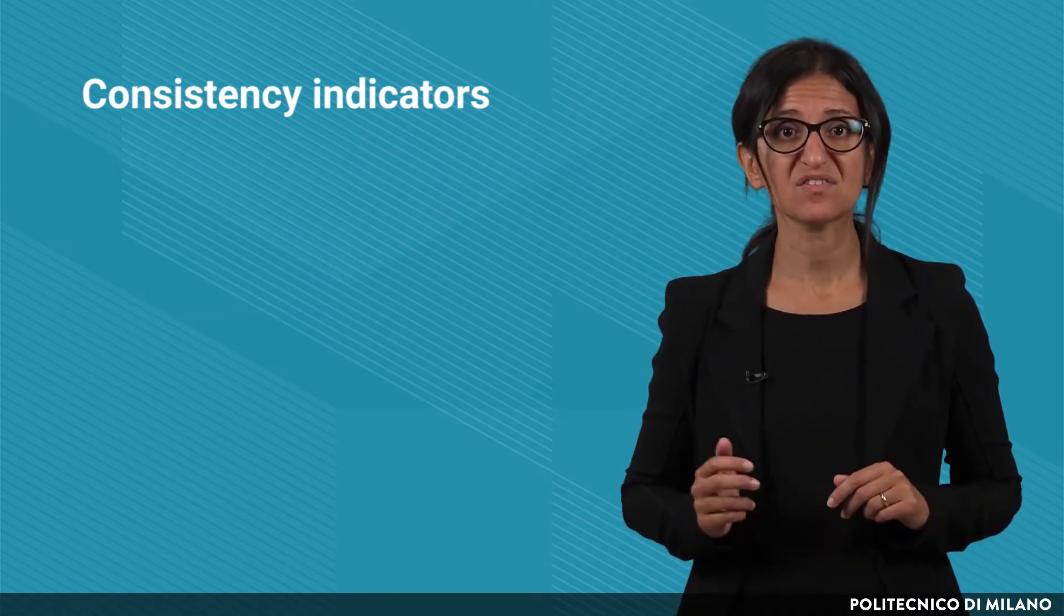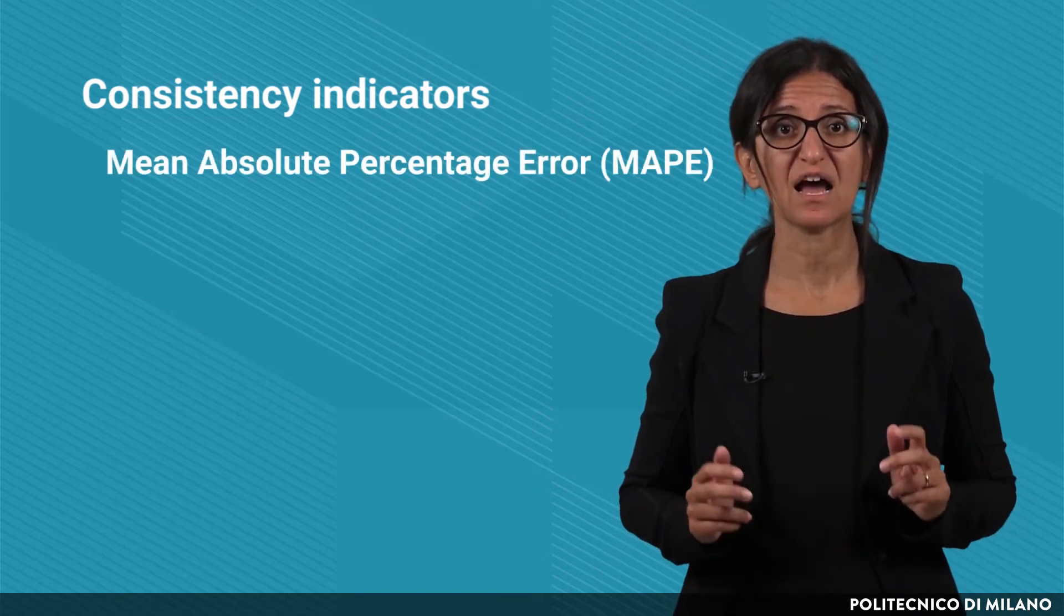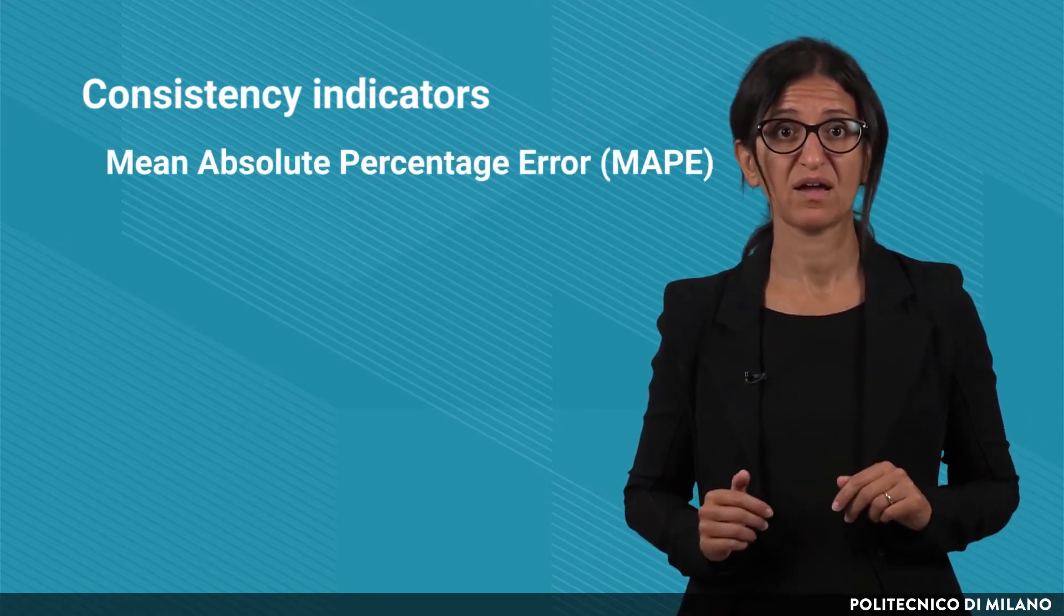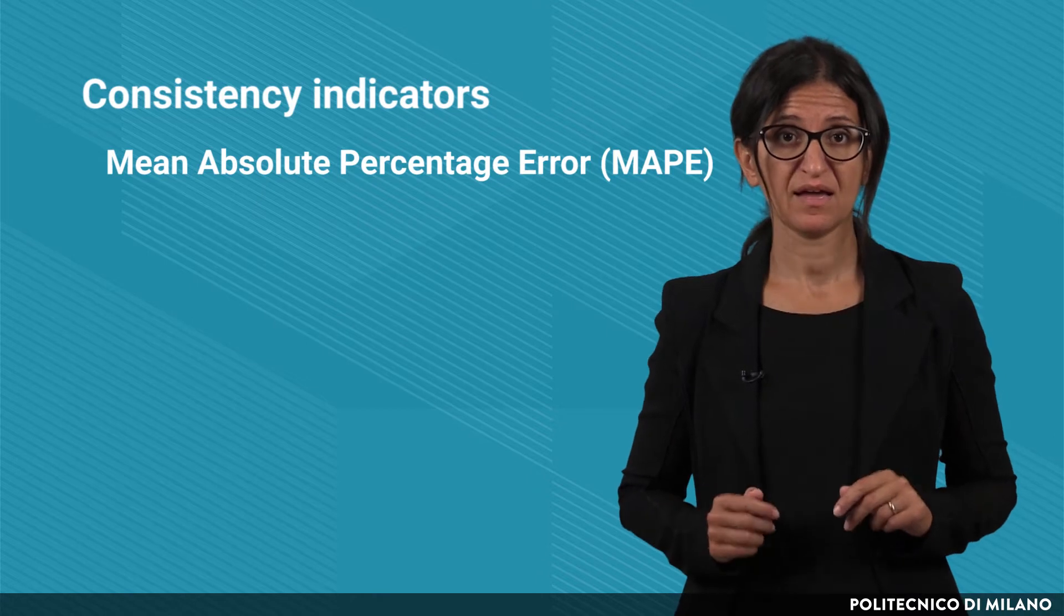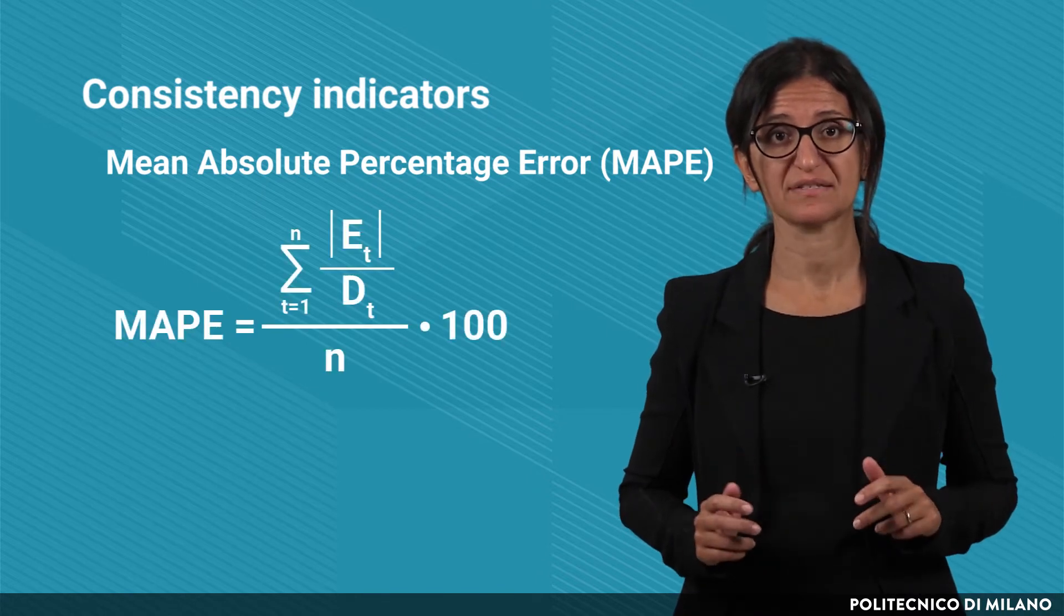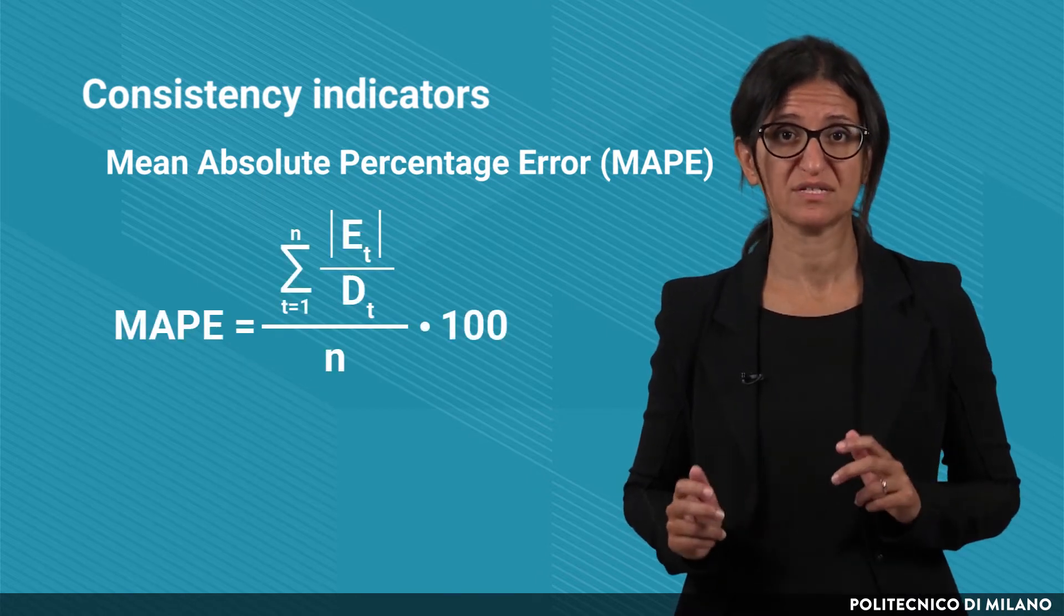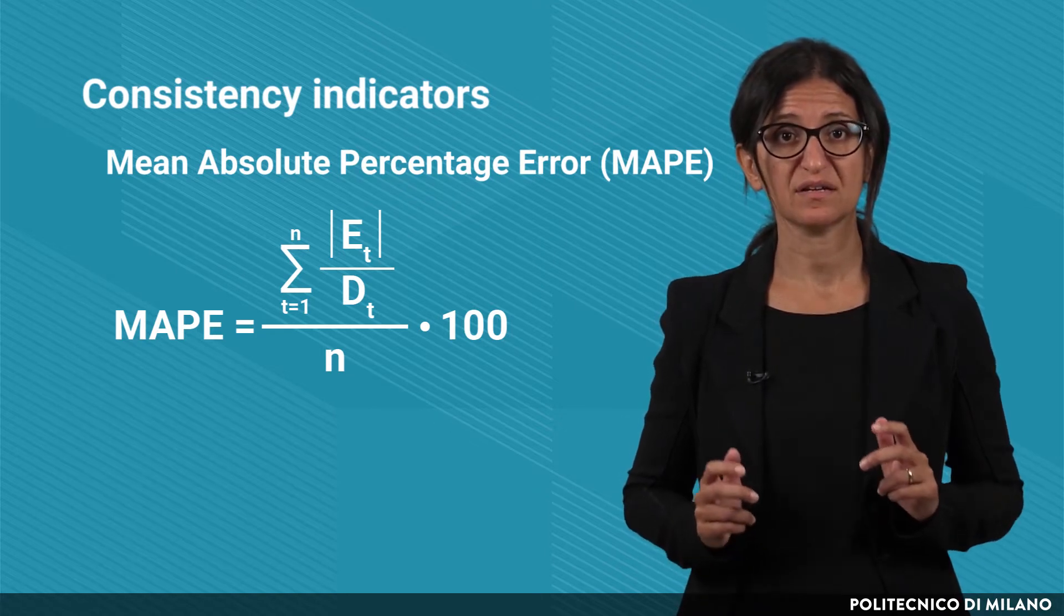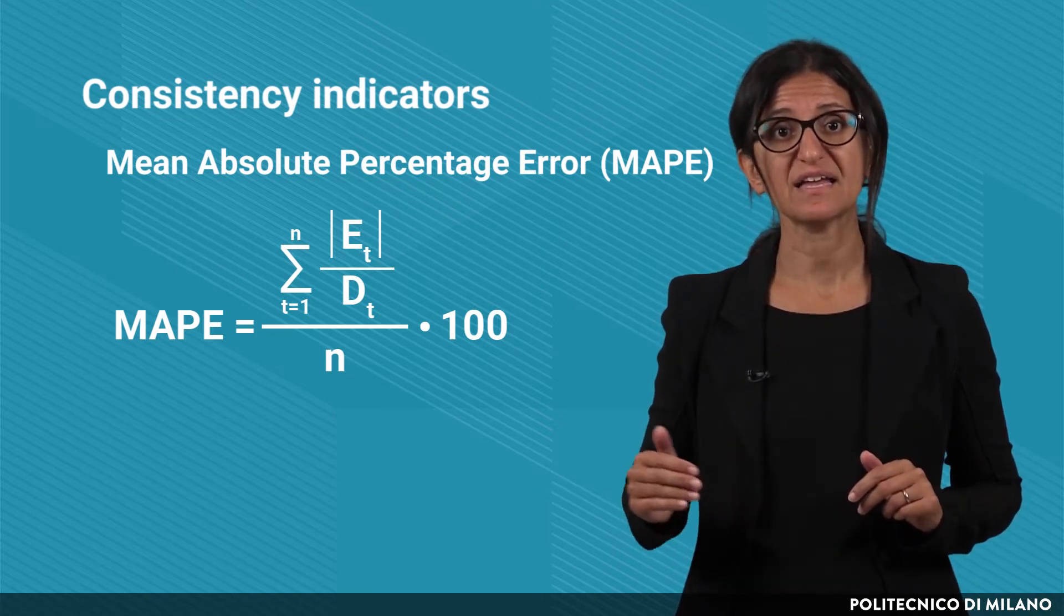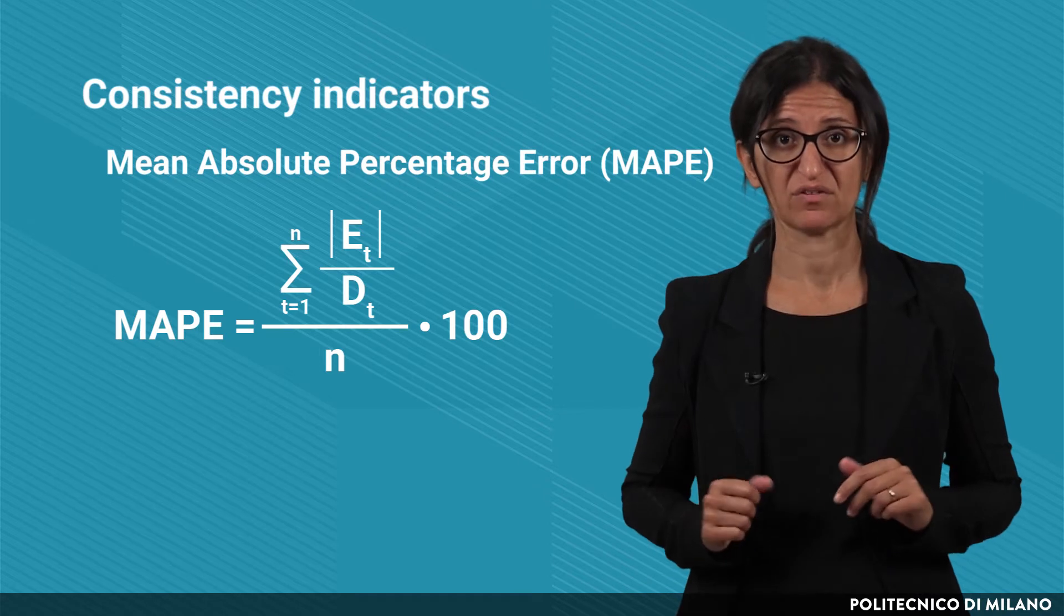In this regard, an interesting indicator is the mean absolute percentage error. This indicator compares the absolute error in period t with the real demand in t and then takes the average of the percentage errors.